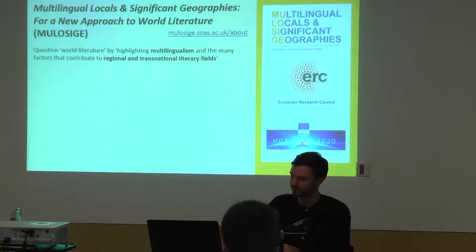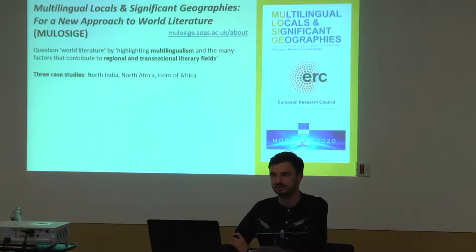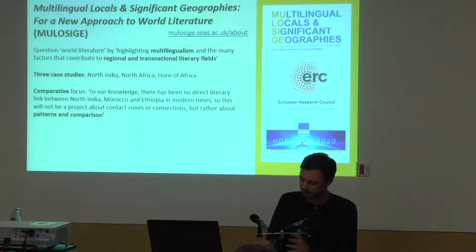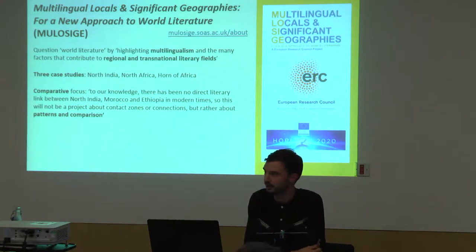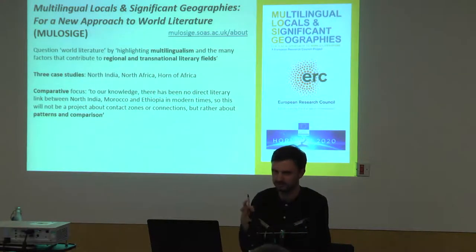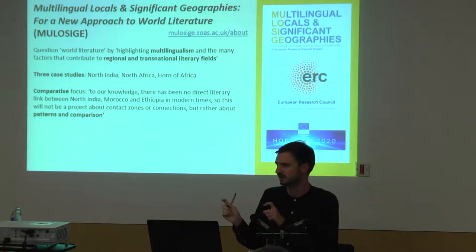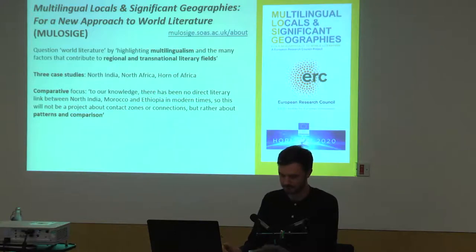In practice, the project revolves around three sites — North India, North Africa and the Horn of Africa — that we're analysing both individually and under a comparative focus. This emphasis on comparison is important as, to our knowledge, there's been no direct link between North India, Morocco and Ethiopia in modern times. This will be a project not about contact zones or connections, but rather about patterns and comparison. Unlike certain methodologies within comparative literature which privilege comparison between a centre in the global north and a periphery in the global south, this project focuses on south-south comparison between regions we feel have been previously under or uncompared.